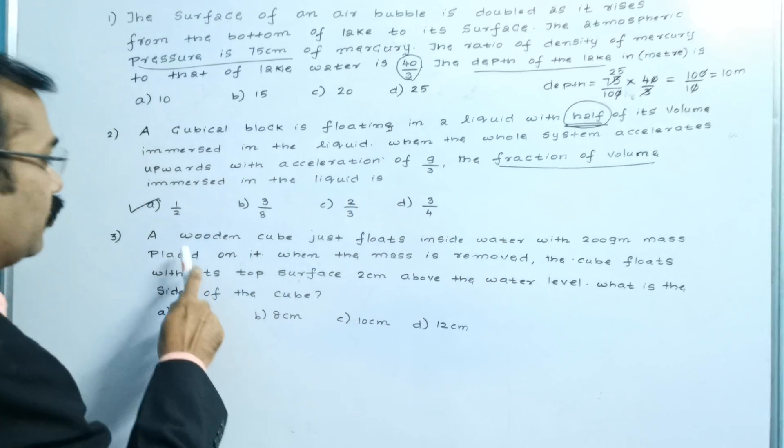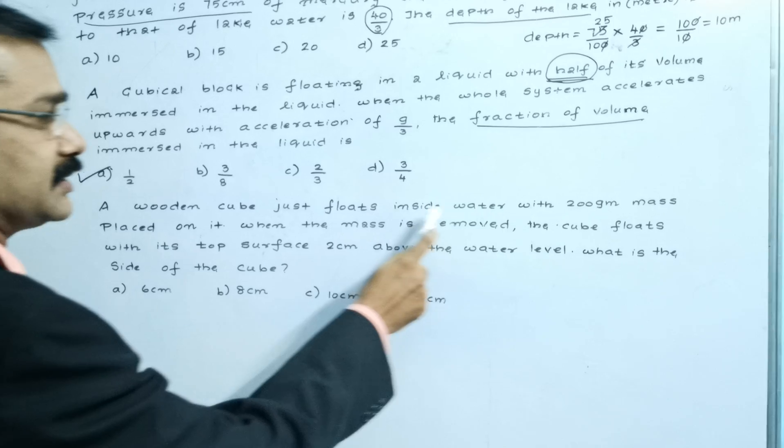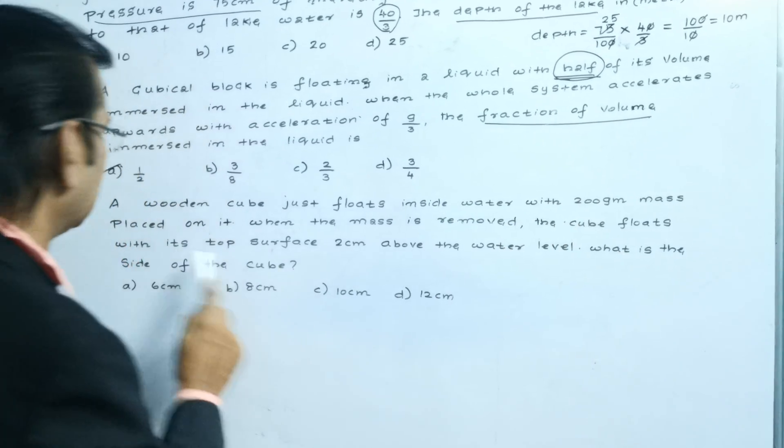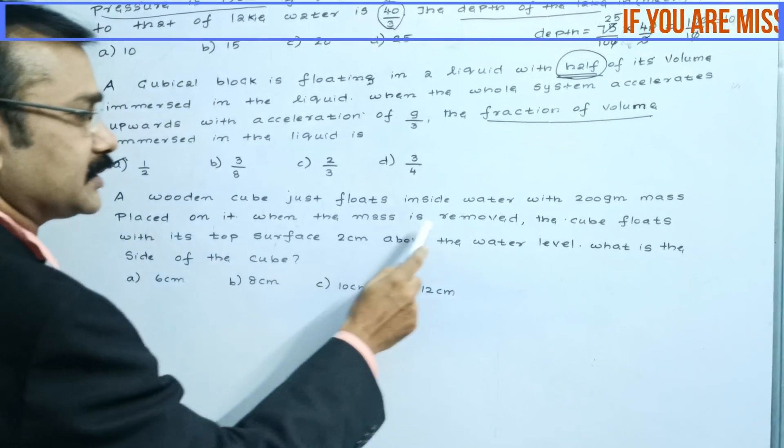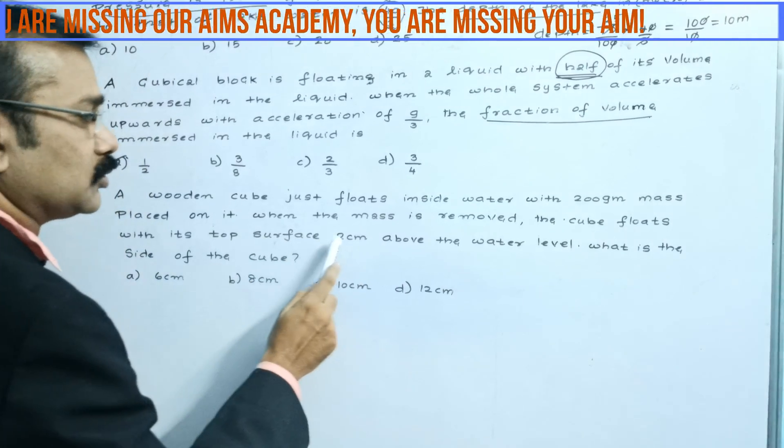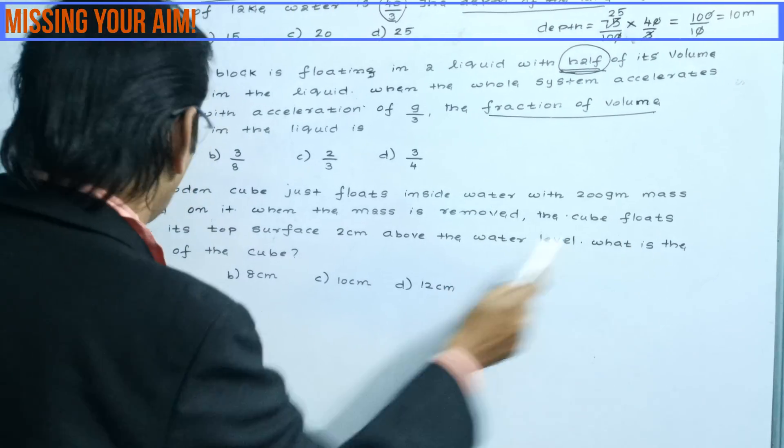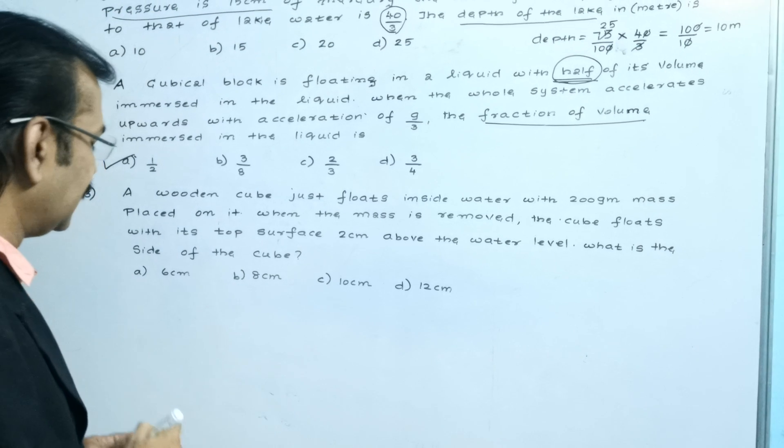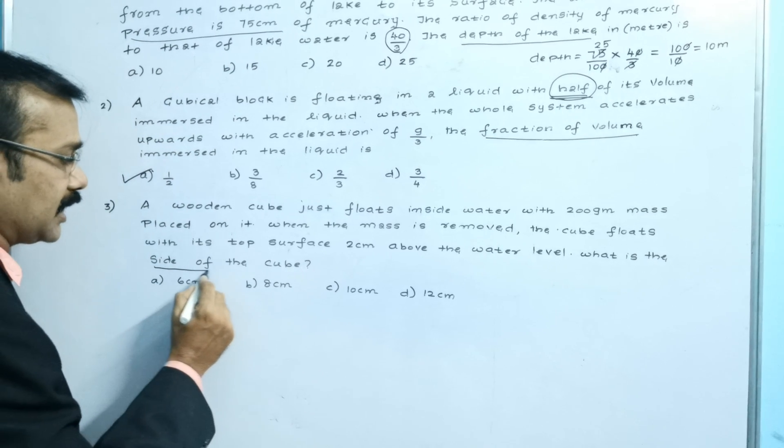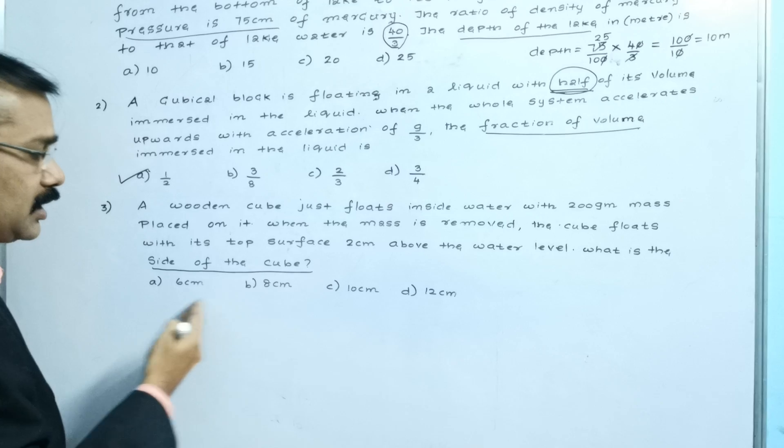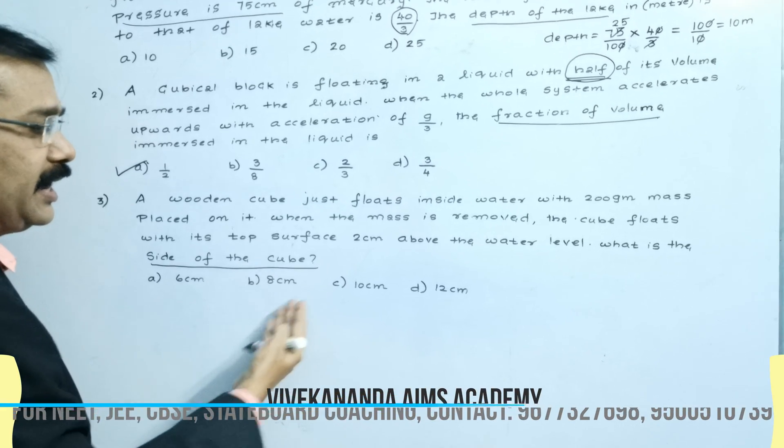See the third question here: A wooden block cube just floats inside water with total mass placed on it. When the mass is removed, the cube floats with its top surface 2 cm above the water level. What is the side of the cube? The important point is he has asked to find the side of the cube. There are 4 options given: 6, 8, 10, and 12.